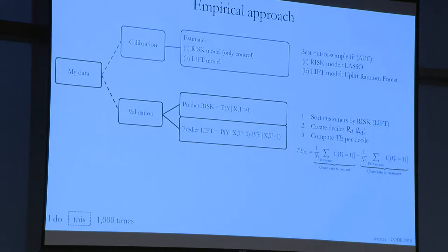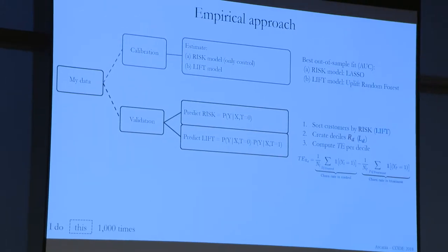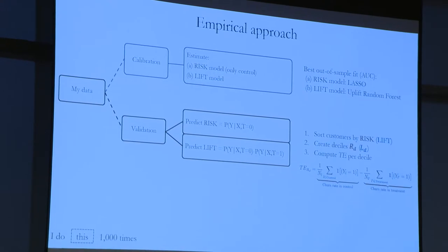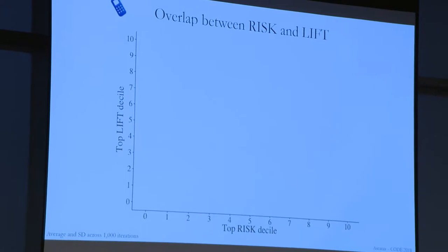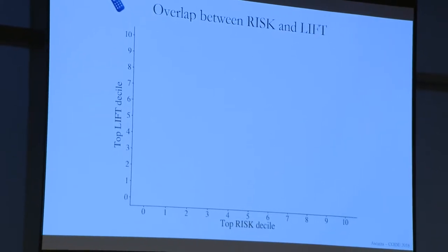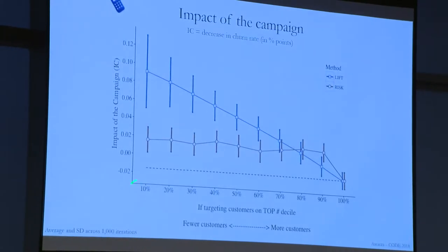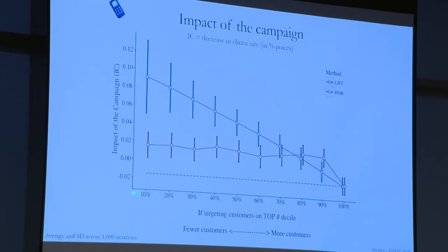What if I go after the top 10 people of highest risk, or top 20? I took my treatment effects and computed an accumulated effect if I target the top 10 customers of highest risk, then top 20, top 30, top 40 — it's essentially the accumulation of the previous treatment effect. The idea was to quantify to the manager how badly they are doing by keeping this policy.